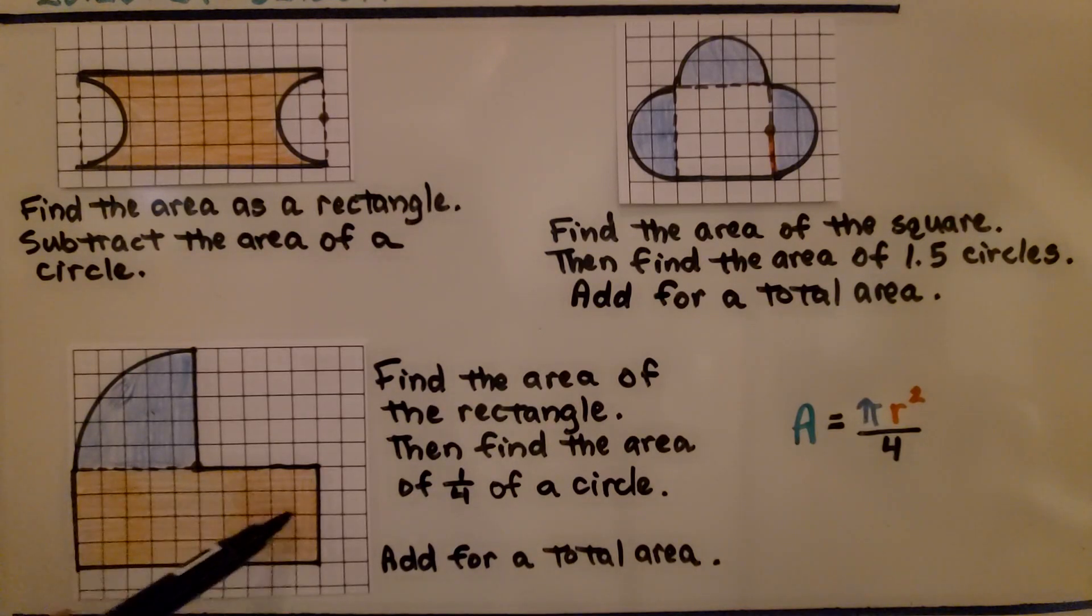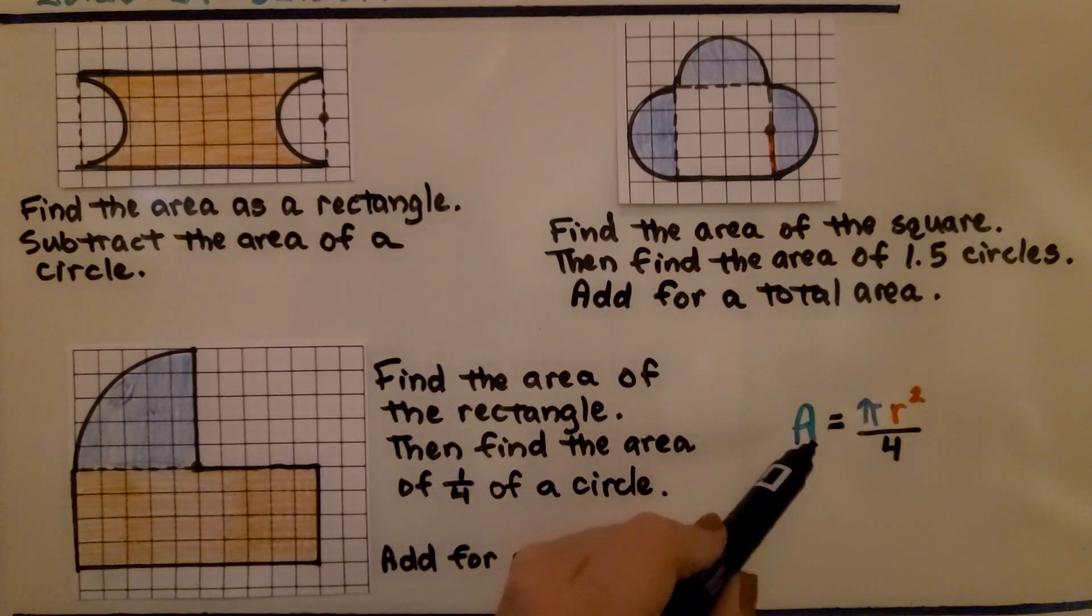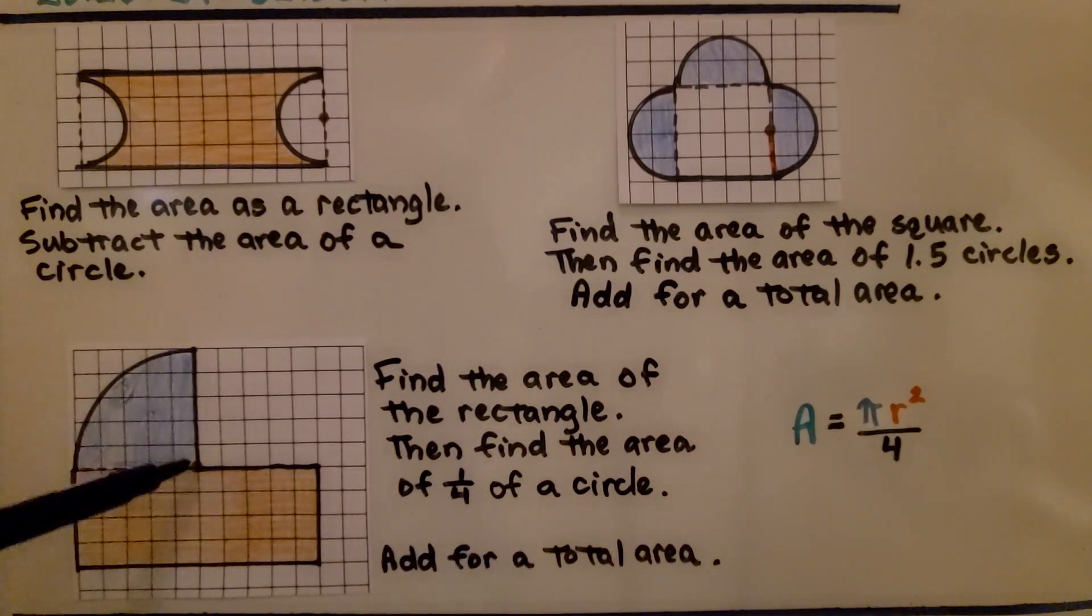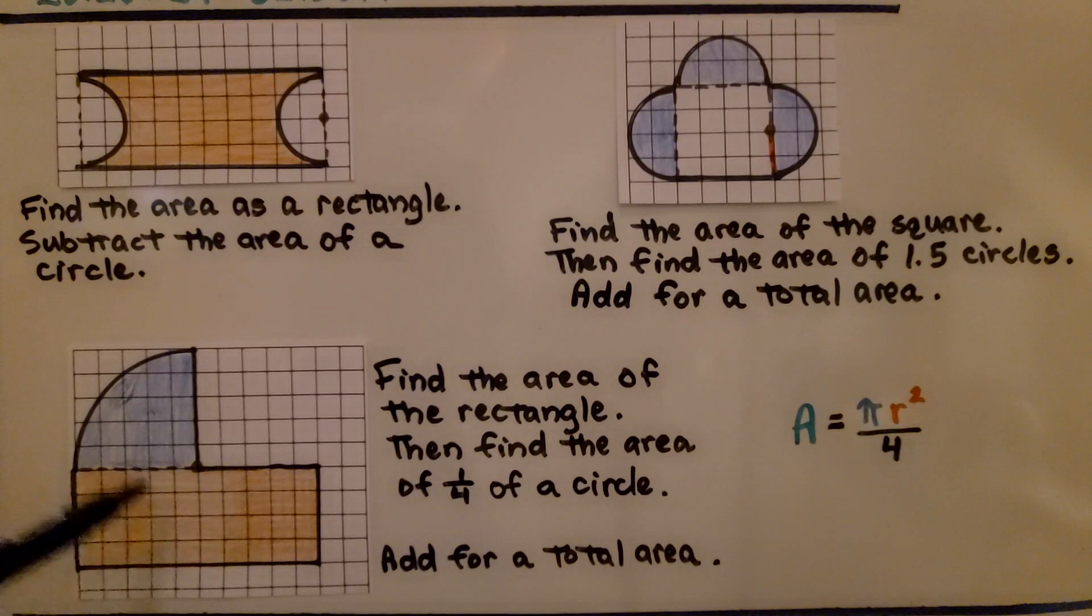For this one, we find the area of the rectangle. Then find the area for one-fourth of a circle. So we would use the formula for the area of a circle, and we would just divide it by four to get this one-fourth of a circle. And we would add the two areas together to get a total area.